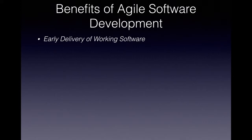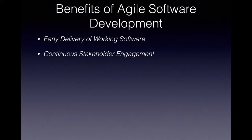The second benefit is continuous stakeholder engagement. When you do continuous delivery in agile, every sprint you are showcasing or demoing your product — the incremental build for that particular product — to the stakeholders. This gives a lot of opportunity to the stakeholder to provide feedback during the showcase, and there is also day-to-day interaction with the stakeholders or product owner during daily stand-ups.